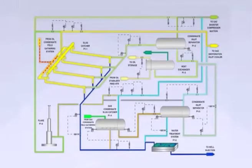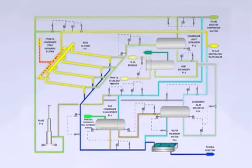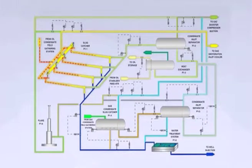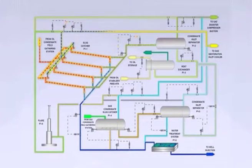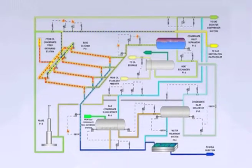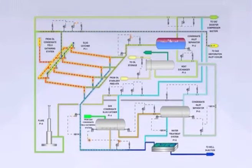The oil condensate enters the finger type slug catcher consisting of several sloped and flanged ends of long pieces of pipe. This type is simpler to design for high pressures which are often encountered in pipeline systems than the vessel type. A disadvantage is that its footprint can become excessively large.